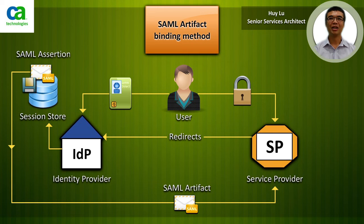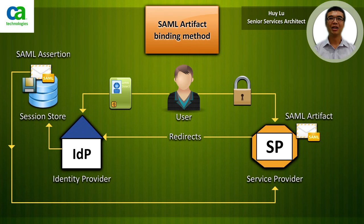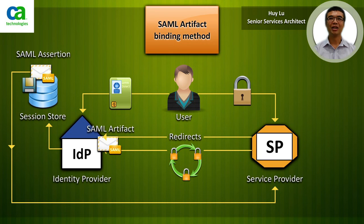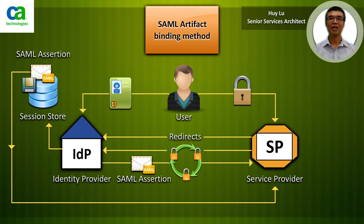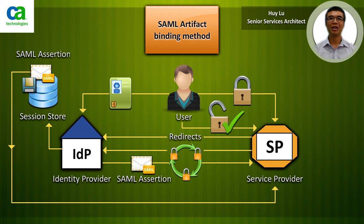The service provider would then take the SAML artifact and request the SAML assertion for that artifact from the identity provider over a secure channel. In step 6, the identity provider then provides the SAML assertion matching the SAML artifact to the service provider. In step 7, the service provider then validates the SAML assertion and redirects the user to the target resource.